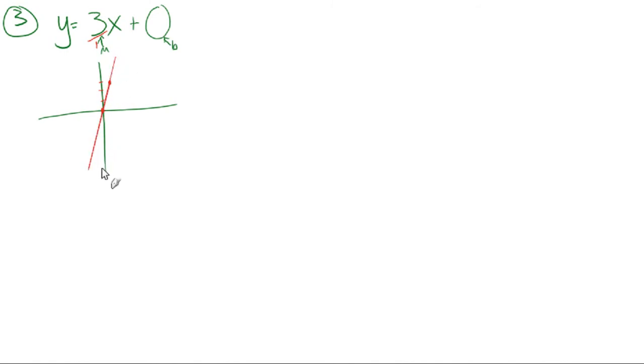Compare it to y equals x. So y equals x is one that goes up 1 and over 1, also has a y intercept of 0. So how do they compare? They look a lot the same. They both go through the origin, but our line, the 3x line, is steeper. So if we were going to compare it, we could say it's steeper. All right, easy enough.